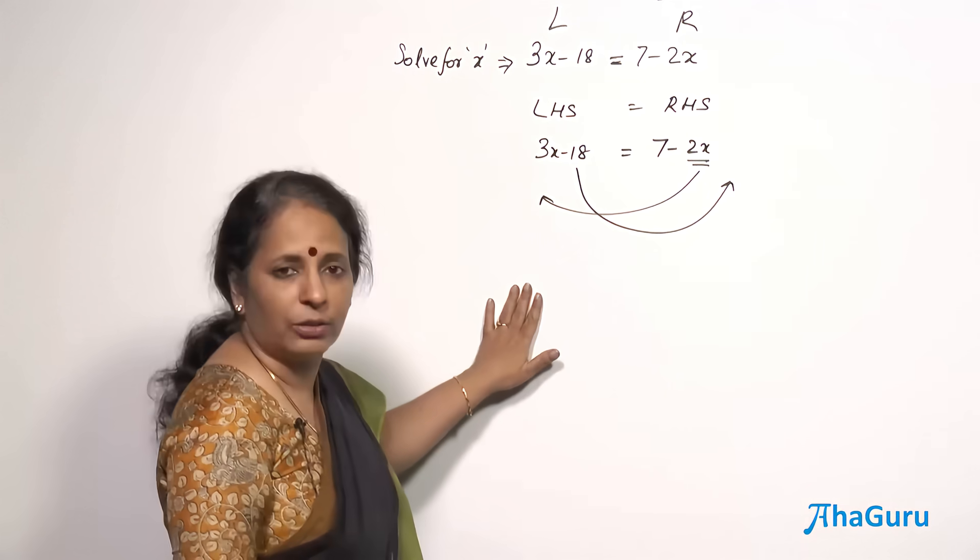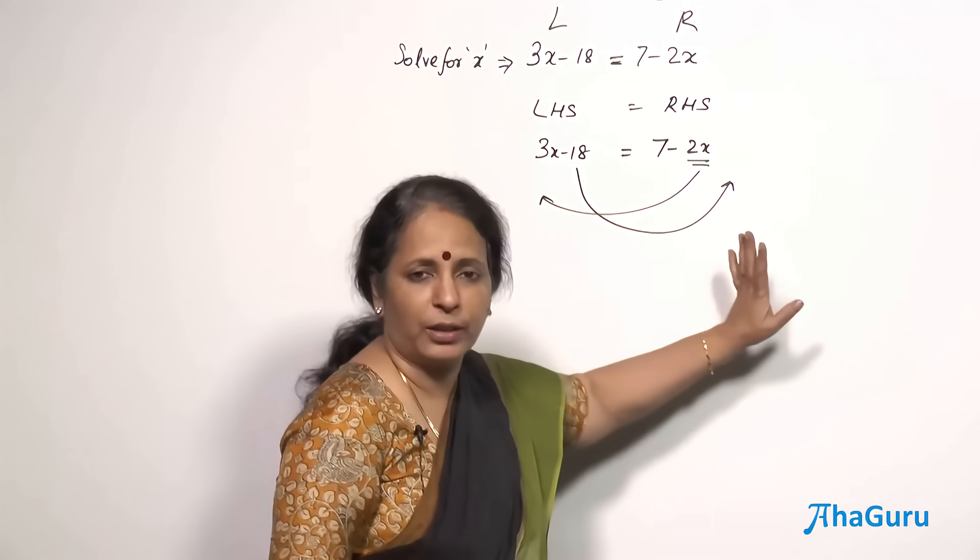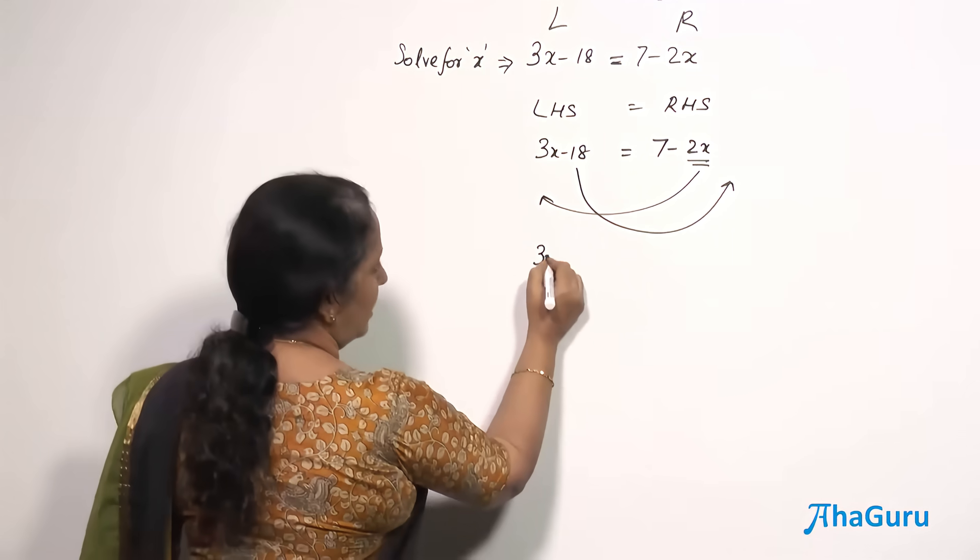And this is the constant which has to go to the other side. This 3x is fine, it is on the left side. No problem. This 7 is also fine. It is a constant on the right side. So keep the 3x as it is.